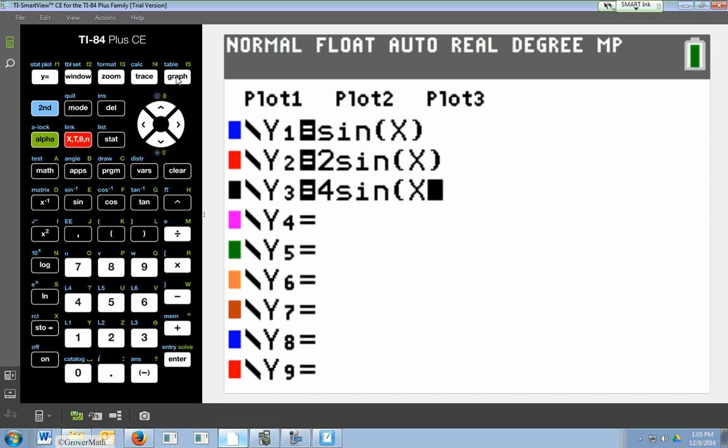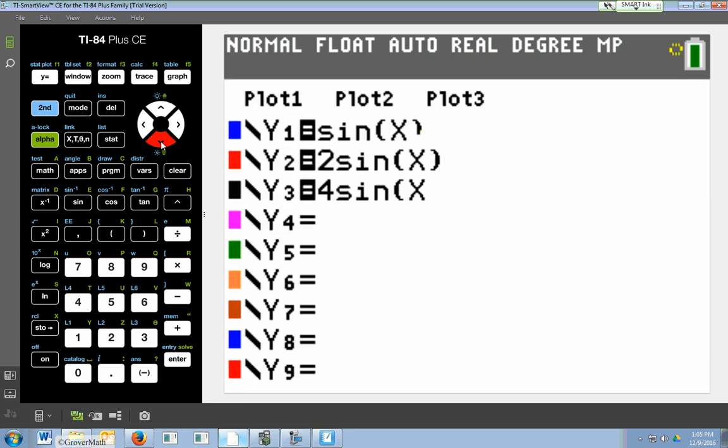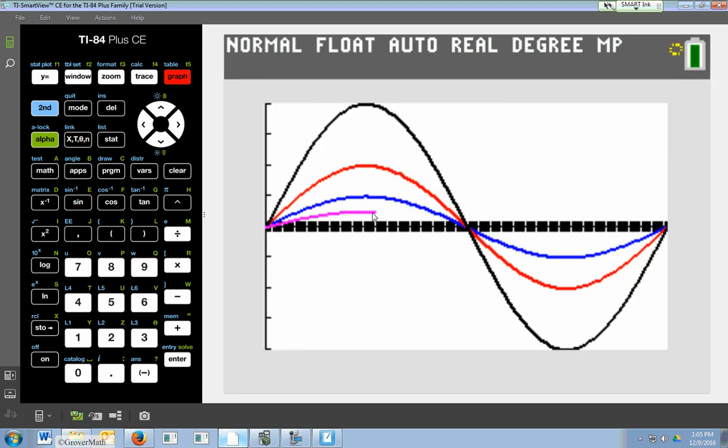So what if we did 4 sine x? Well, you're going to see a wave that goes up to 4 and down to 4. So the amplitude changes there. If we were to change it to half sine x, so I could do 0.5 sine x. You'll see that it only goes halfway there. And so it's the same thing with cosine.